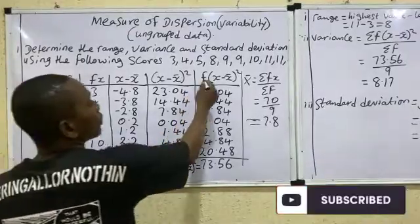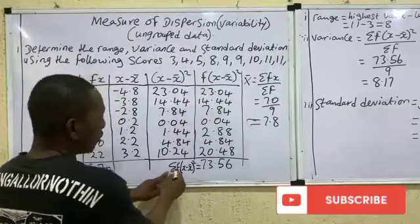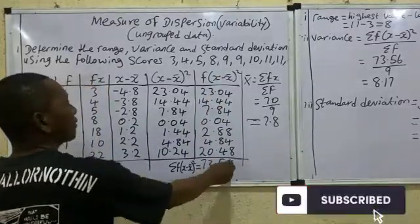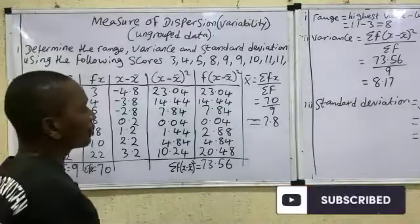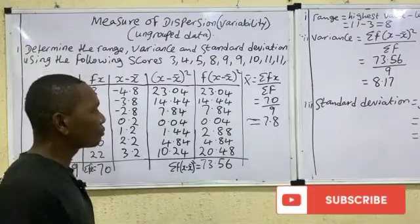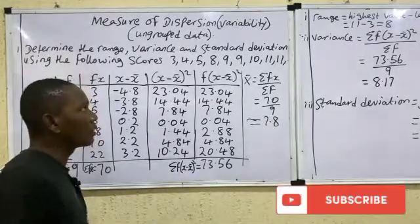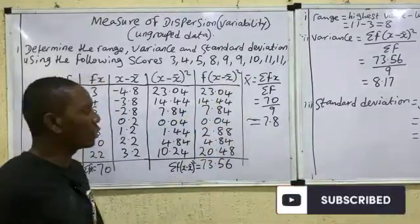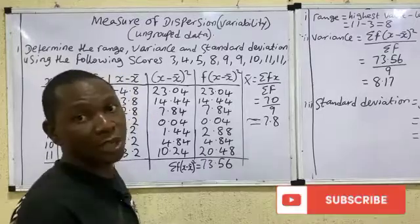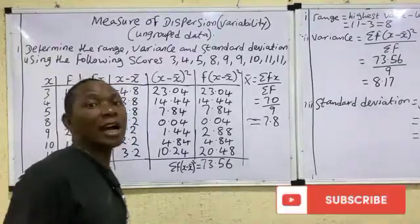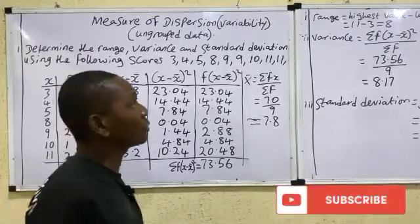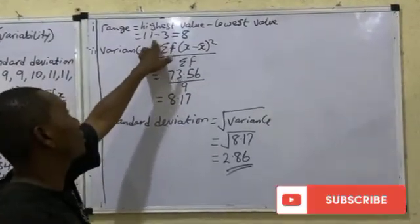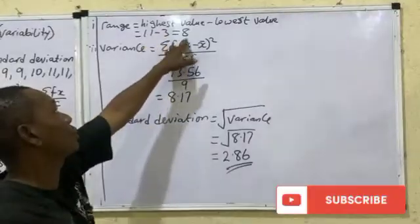Now add all the f(x minus x-bar) squared values together. The sum is 73.58. Next, let's calculate the range. The range is simply the highest value minus the lowest value. The highest value is 11 and the lowest is 3, so the range is 11 minus 3, which is 8.